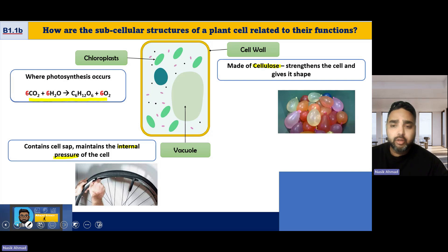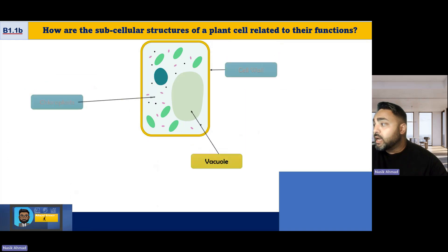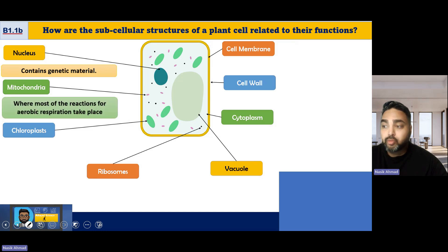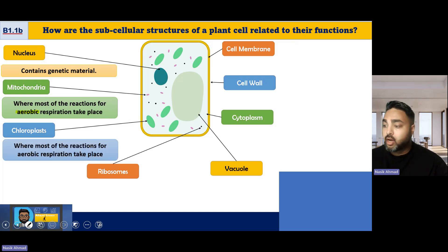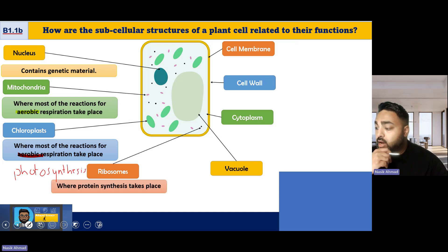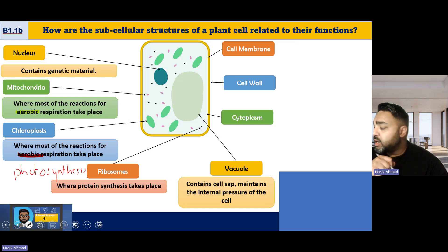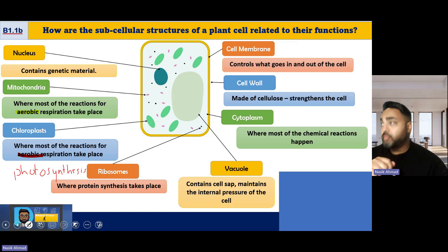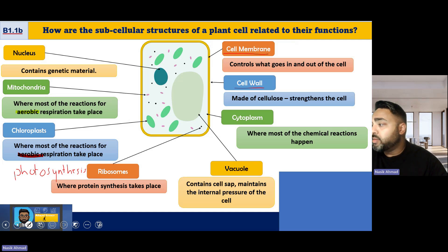The cell wall is made of cellulose, which is really important. It strengthens the cell and gives it shape. It is not what is used to allow things into and out of the cell. The cell wall and the cell membrane are typically the two things that students get most confused. Remember: the cell membrane controls what goes in and out, while the cell wall — made of cellulose — provides structural support.